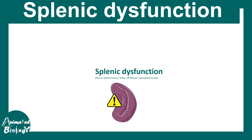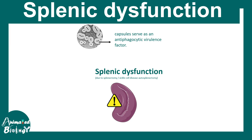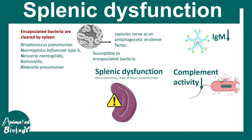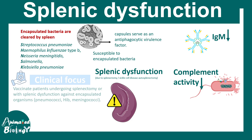Splenic dysfunction can occur due to surgical removal of the spleen (splenectomy), sickle cell disease (autosplenectomy), or rupture of the spleen due to an accident. Splenic dysfunction leads to problems especially with encapsulated bacteria: blood IgM levels go down, complement activity goes down, and the risk of encapsulated bacterial infections increases. The specific bacteria of concern include Streptococcus pneumoniae, Haemophilus influenzae type B, and Neisseria meningitidis. Therefore, vaccination against encapsulated organisms is critically important for individuals who have undergone splenectomy or have splenic dysfunction.